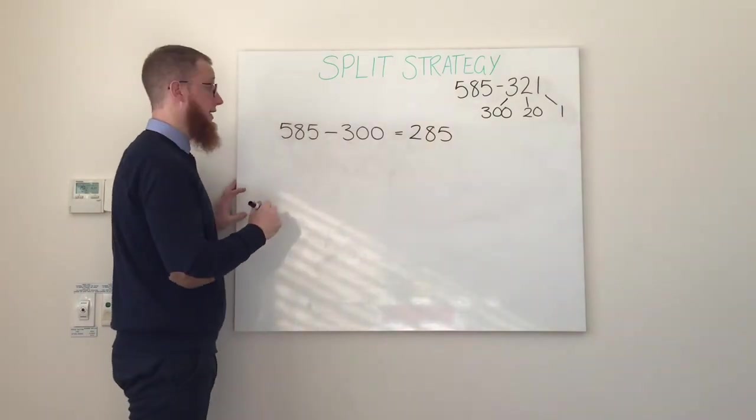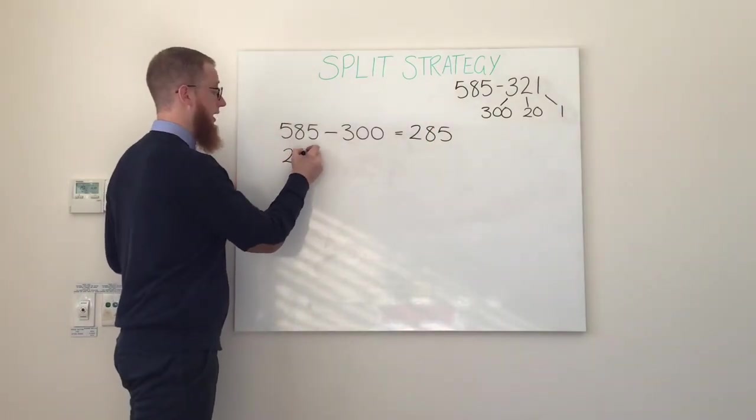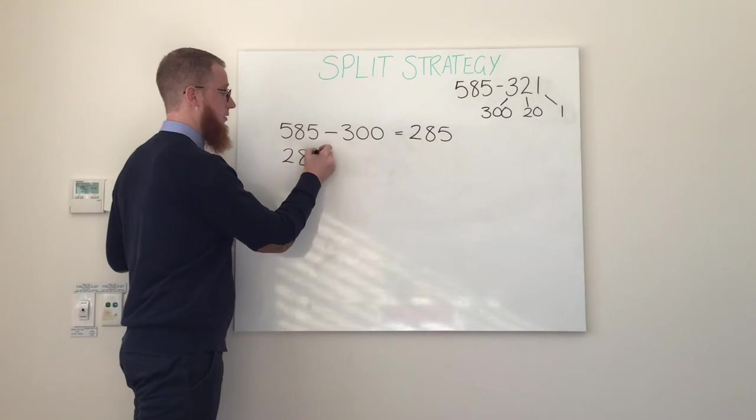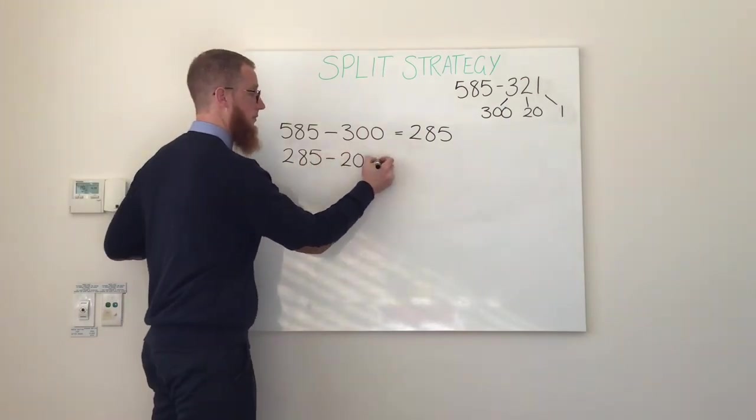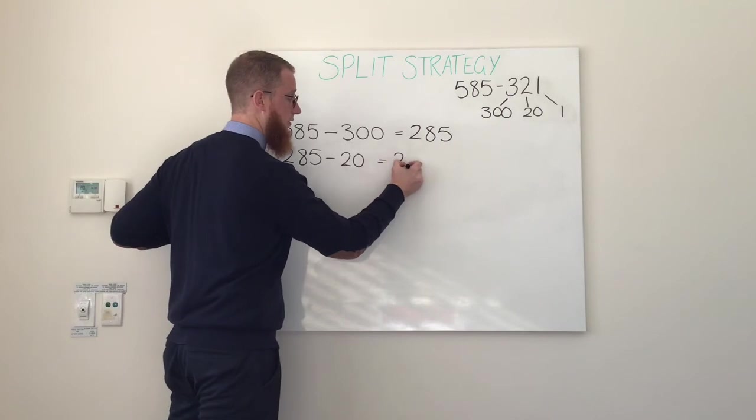Our next step: take away our two tens. 285 minus 20 equals 265.